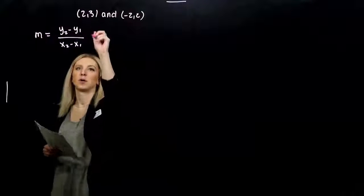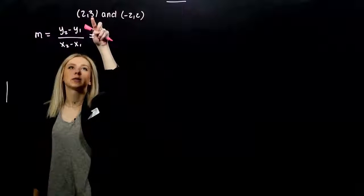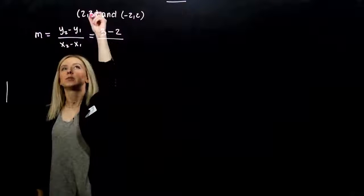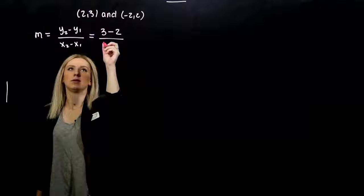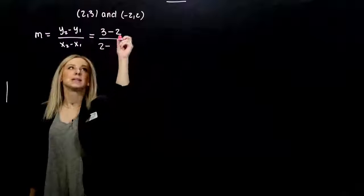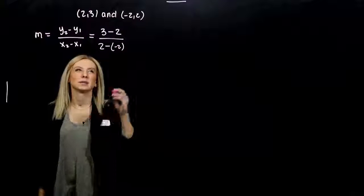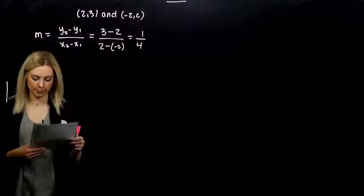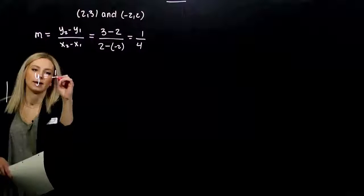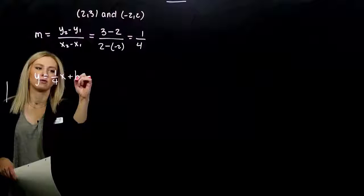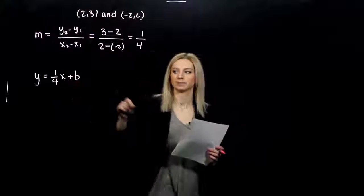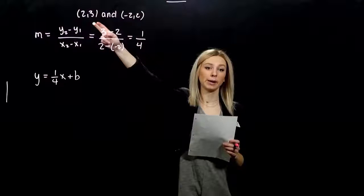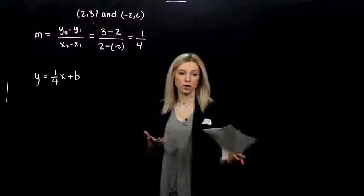Let's figure out the slope. Difference between the y's — I'll pick this point first: y2 minus y1 over x2 minus x1. Minus and minus gives us a plus, so we're looking at 1/4 for our slope. Now I know the slope, but I don't know the y-intercept. I have two choices for points to plug in for x and y to figure out b — either one doesn't matter.